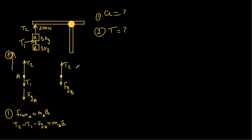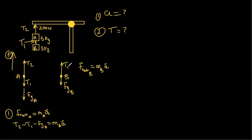That's equation number one. For mass B, F_net for B equals mass B times the acceleration. Choosing up as positive — I made a mistake earlier, it's tension one, not tension two, for mass B. So for mass B it's only tension one: T1 − Fg_B = m_B × a. That's equation number two.